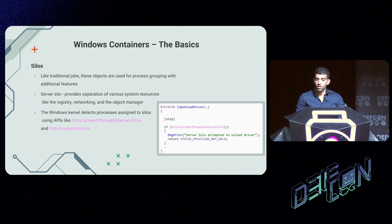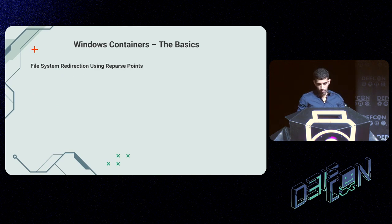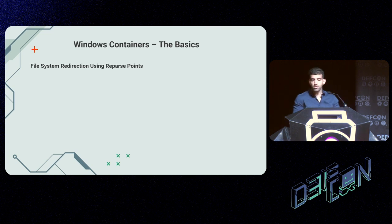Looking at the IoUnloadDriver snippet taken from the NT kernel, the Windows kernel checks whether the process that attempted to unload the driver is within a server silo, and if it is, it blocks the operation by returning STATUS_PRIVILEGE_NOT_HELD. So silos provide a good foundation for a container, but file system separation is still needed. Microsoft implemented this concept using reparse points.